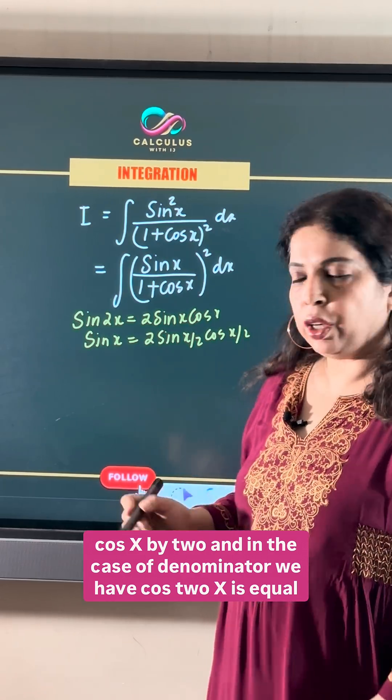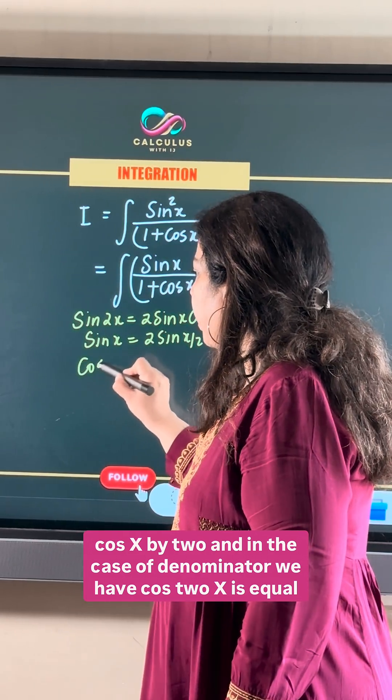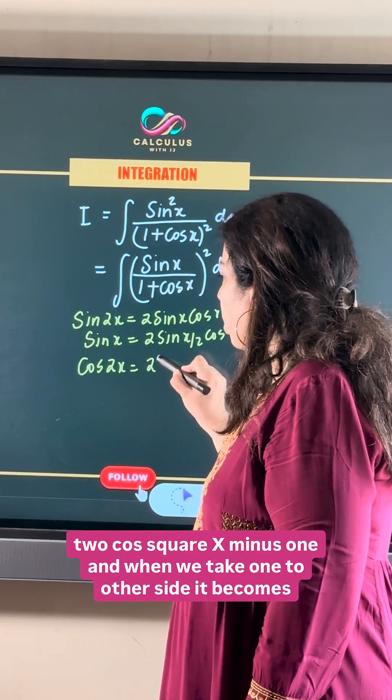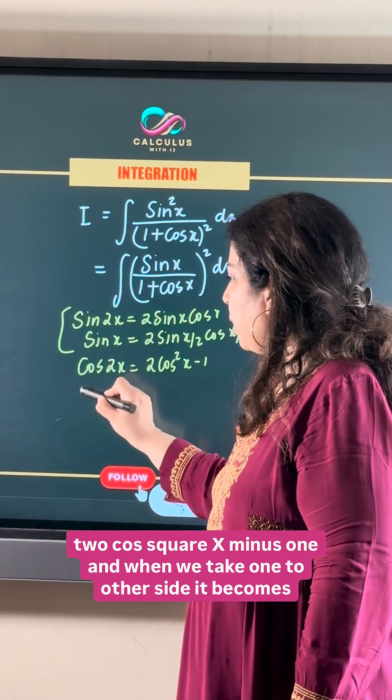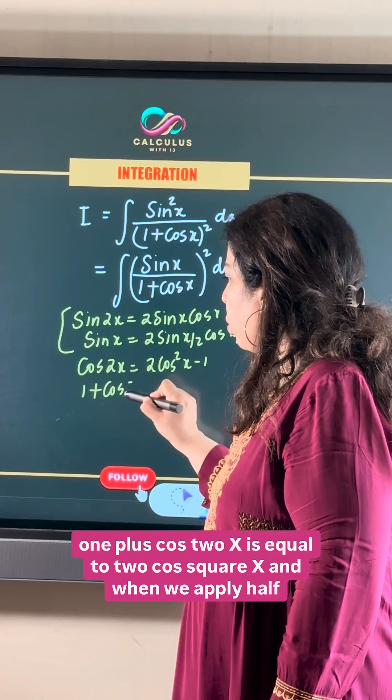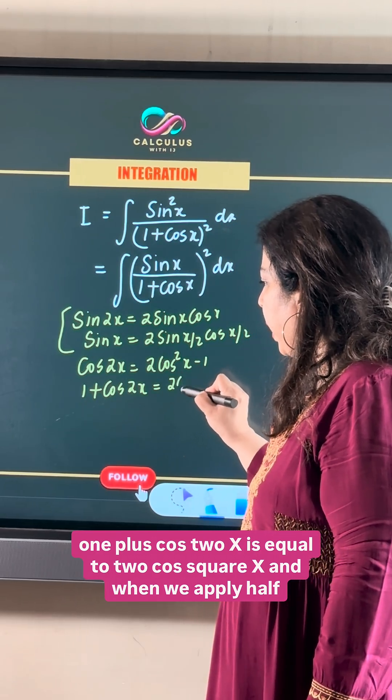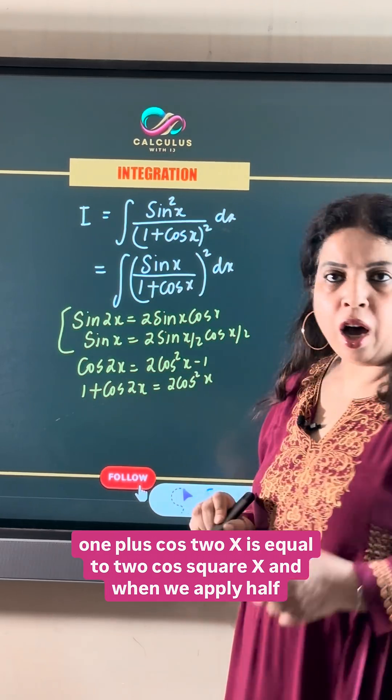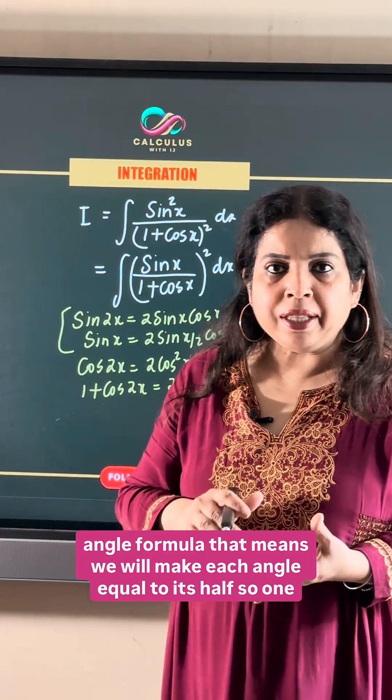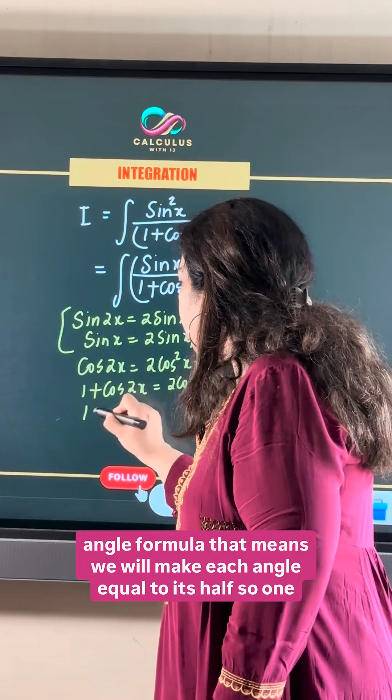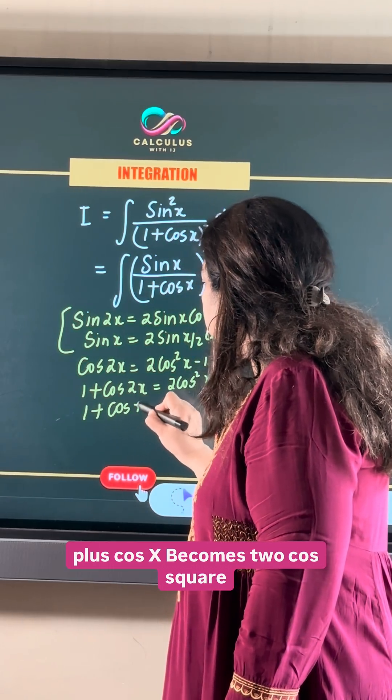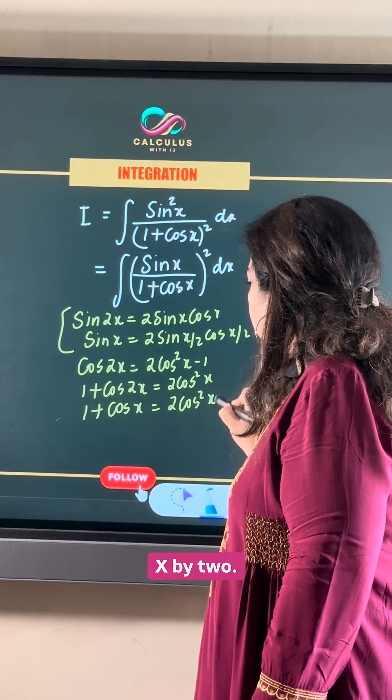For the denominator, we have cos 2x equals 2 cos square x minus 1. When we take 1 to the other side, it becomes 1 plus cos 2x equals 2 cos square x. When we apply the half angle formula, making each angle equal to its half, 1 plus cos x becomes 2 cos square x by 2.